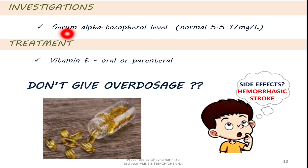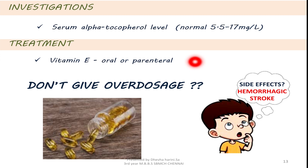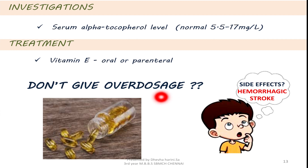Investigations: serum alpha tocopherol level is assessed. The normal is about 5.5 to 17 mg per litre. Treatment: vitamin E is given orally or parenterally. For people with low concentration of bile salts who cannot absorb the oral preparations, intramuscular administration is necessary. Among the fat soluble vitamins A, D, E and K, vitamin E is the least toxic. But one serious side effect can be seen which is hemorrhagic stroke, and some other side effects are hardening of the arteries and high blood pressure.